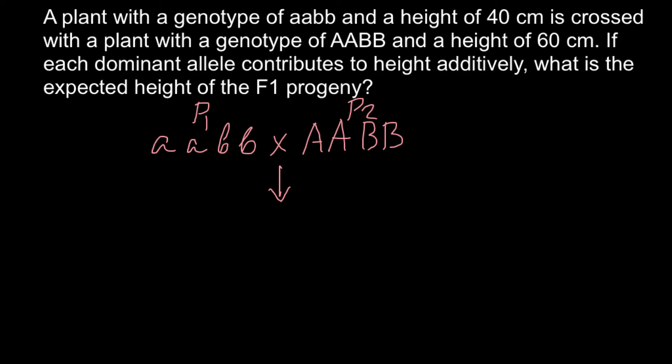We know that parent 1 height is 40 cm and parent 2 height is 60 cm, and they would produce an F1 generation progeny that is going to be heterozygous for both alleles. So the genotype is capital A small a and capital B small b. As you see, parent 1 can only donate small allele a here and parent 2 can only donate capital allele A.